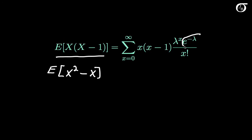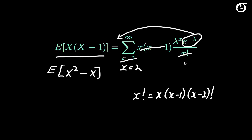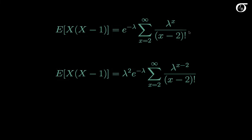Let's bring e to the minus lambda outside of the summation. When x equals 0, the whole term goes to 0, and when x equals 1 we have an x minus 1 factor, so again the term is 0. So we can change the lower limit of summation to x equals 2. Since x factorial can be written as x times x minus 1 times x minus 2 factorial, we cancel x times x minus 1 with the numerator, and we are left with x minus 2 factorial in the denominator.